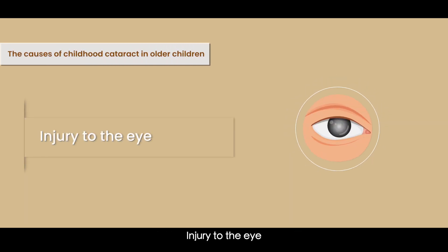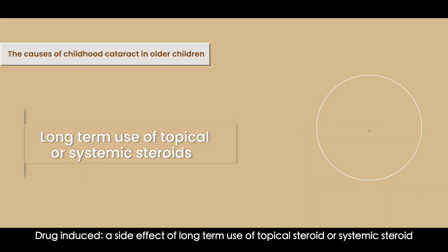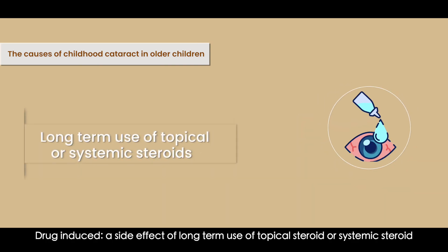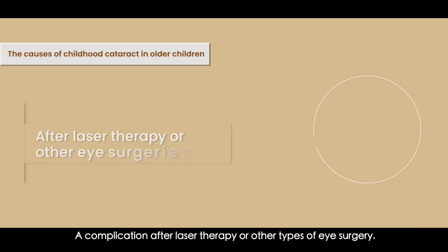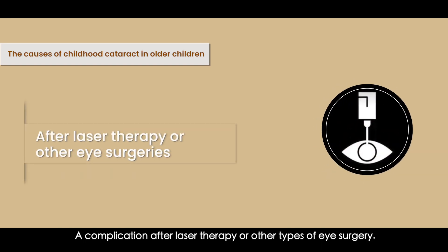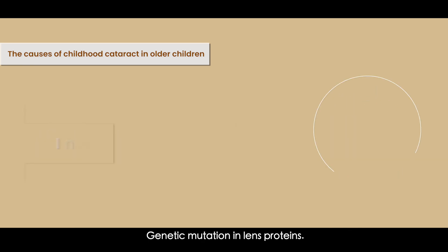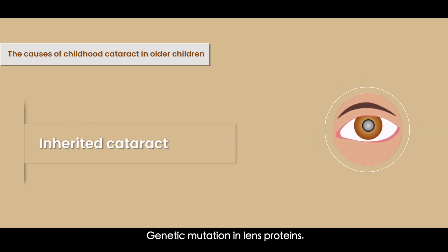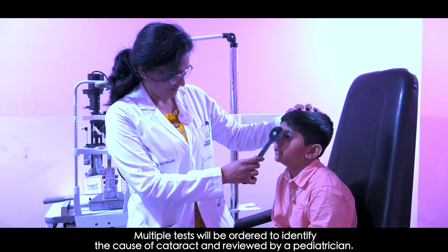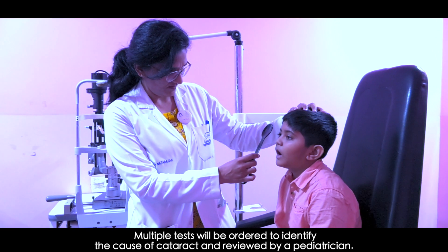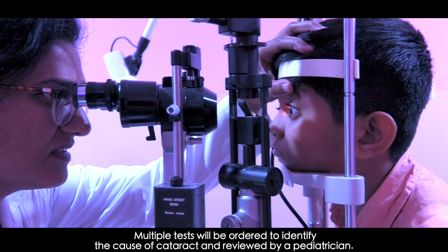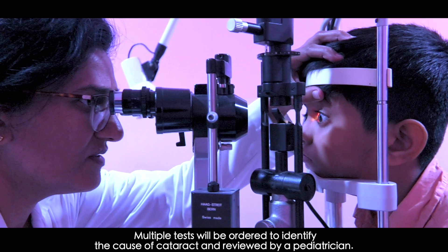The causes of childhood cataract in older children may be injury to the eye, drug-induced causes such as a side effect of long-term use of topical or systemic steroids, a complication after laser therapy or other types of eye surgery, or inherited cataract due to genetic mutation in lens proteins. There will be multiple tests ordered to identify the cause of cataract, reviewed by a pediatrician.